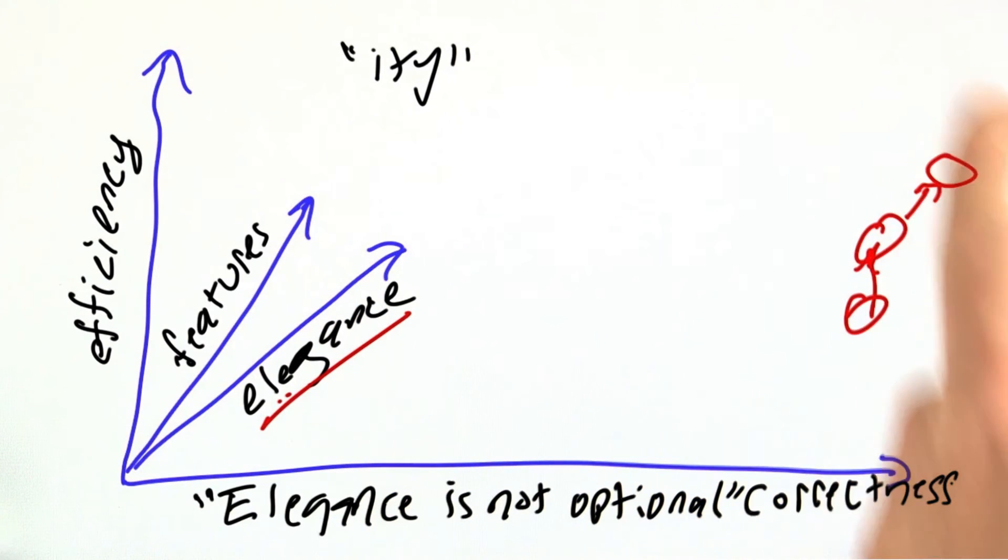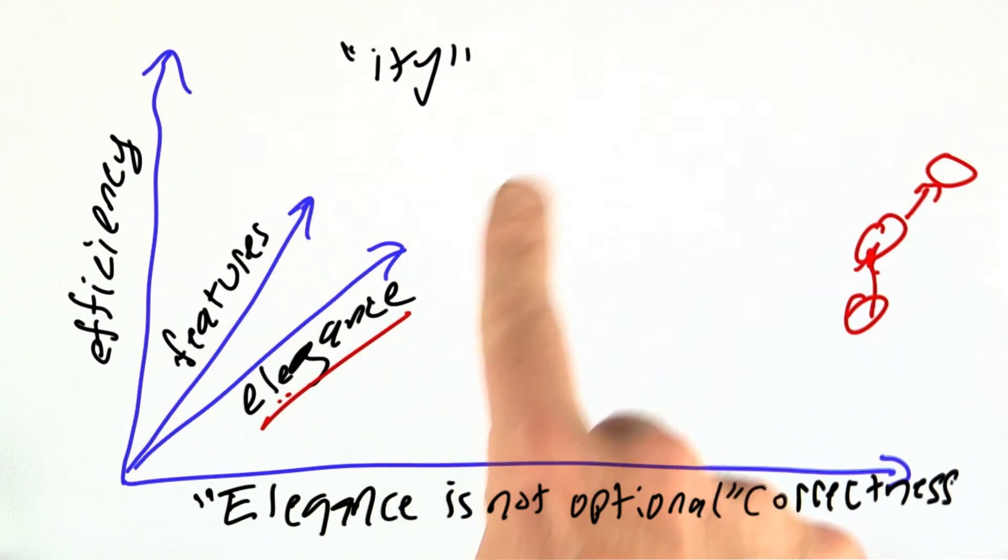When I think of a point in this multidimensional space, we have correctness up against the right edge, but maybe not quite all the way. Similarly with all these other features. Voltaire was not a programmer,